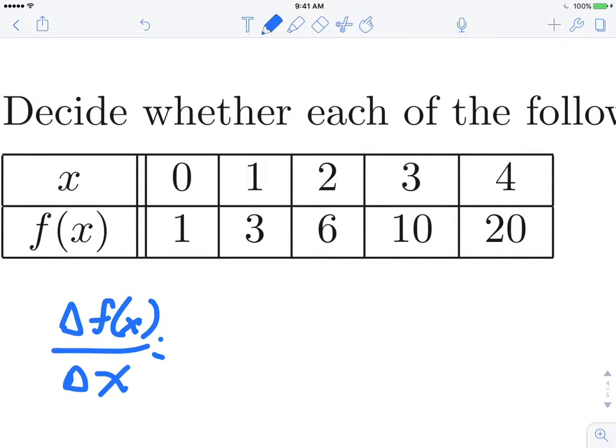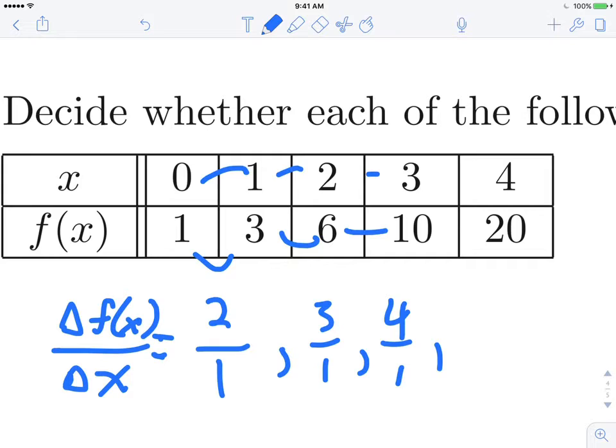All right, so for the first one, the change here is 2 over 1, and then the next pair is 3 over 1, next pair is 4 over 1, and the next pair is 10 over 1.